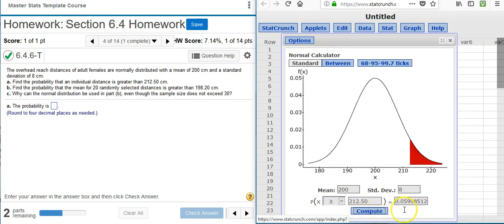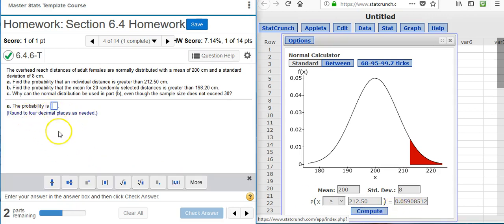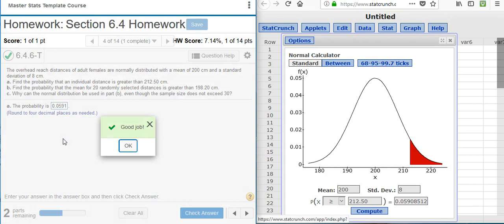StatCrunch automatically computes my probability for me. I'm asked to round to 4 decimal places, so I do that. Good job!